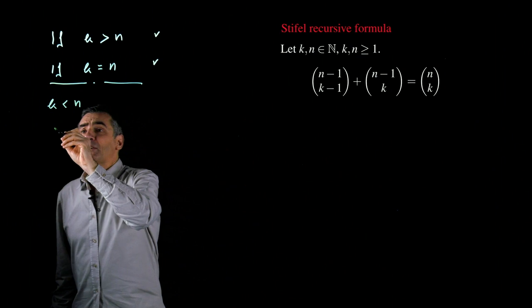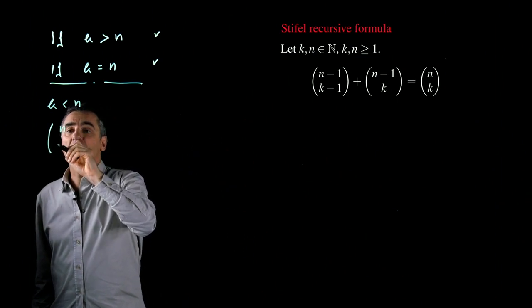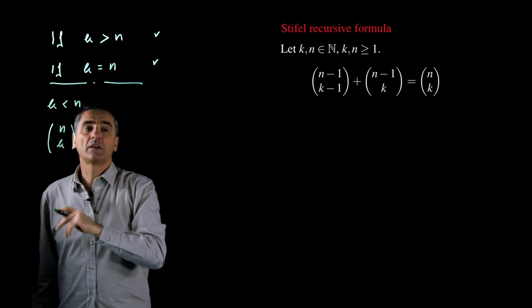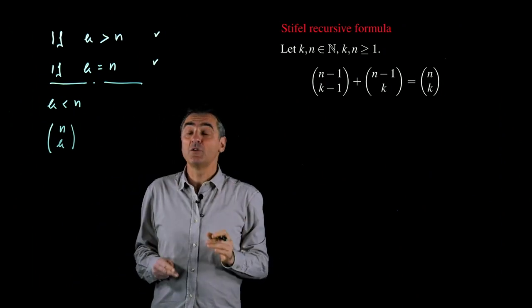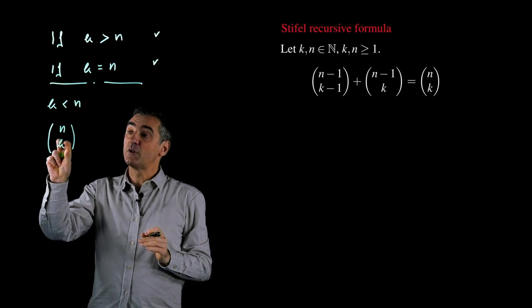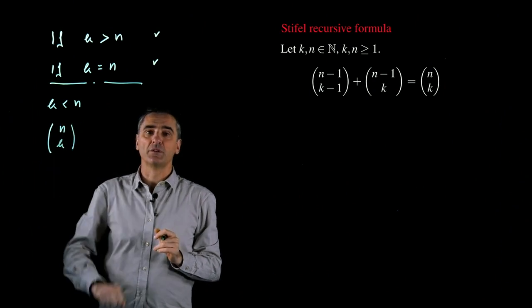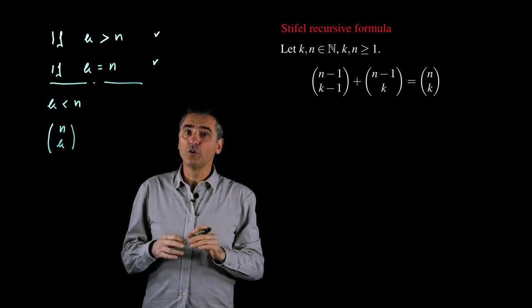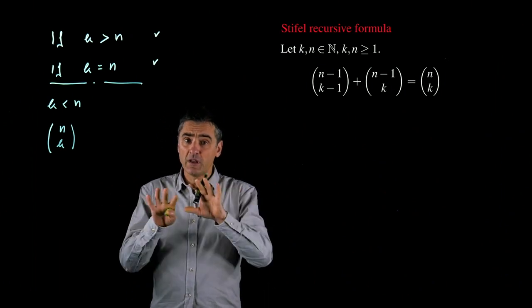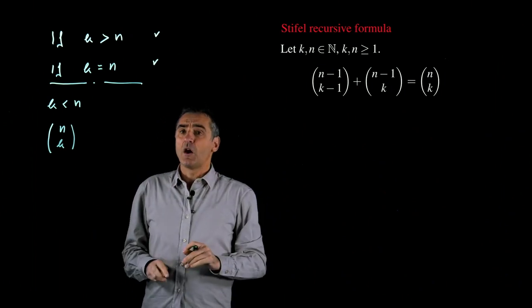The binomial coefficient n over k counts what? In how many ways you can choose k numbers among n numbers. And now, let us divide all these possible choices in two classes.